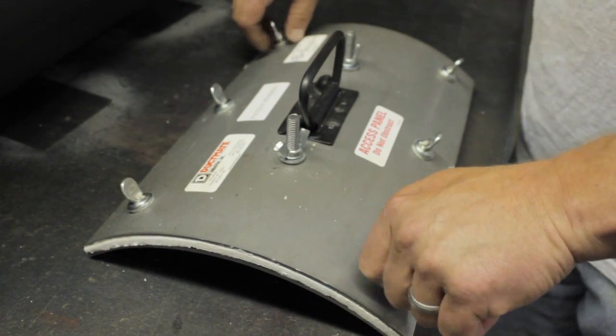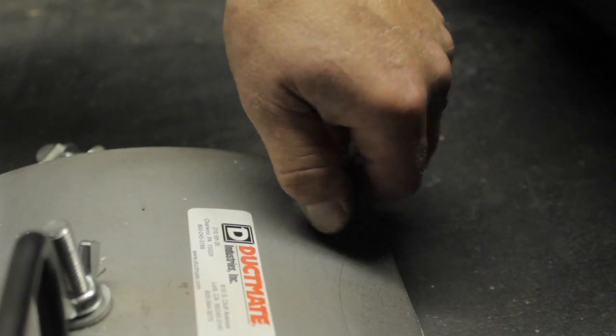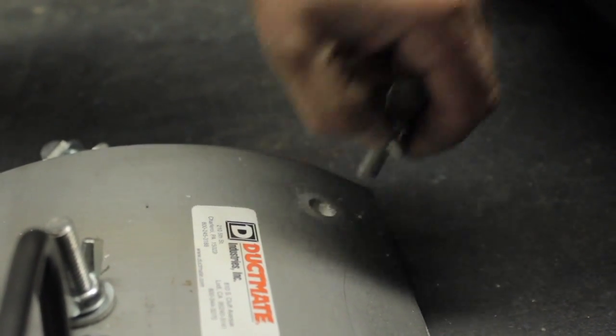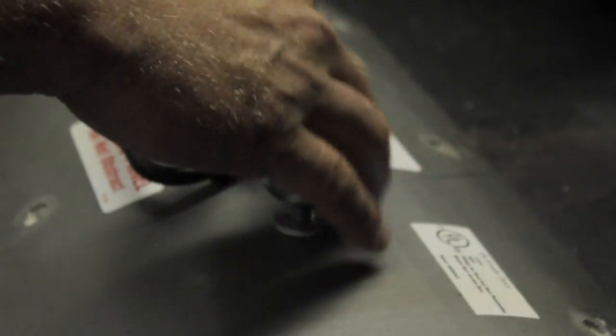It consists of two layers of 11 gauge steel and is available in black iron or type 304 stainless steel. Available in three sizes: 10x6, 12x8, and 18x14.